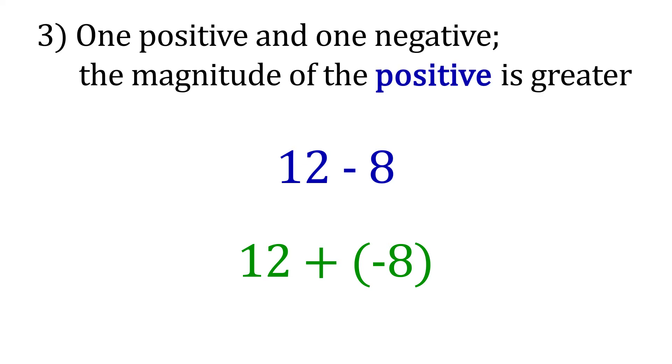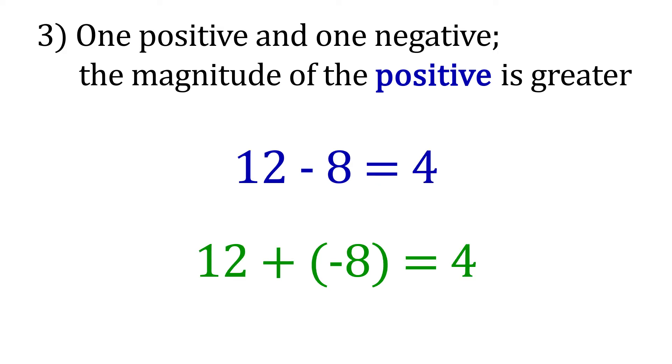Let's look at the example 12 minus 8. What we actually have here, and how the computer is going to interpret this, is 12 plus negative 8. So this is the addition of one positive and one negative number, where the positive has a greater magnitude. Performing the math, and there we go. We have the difference, which is 4.